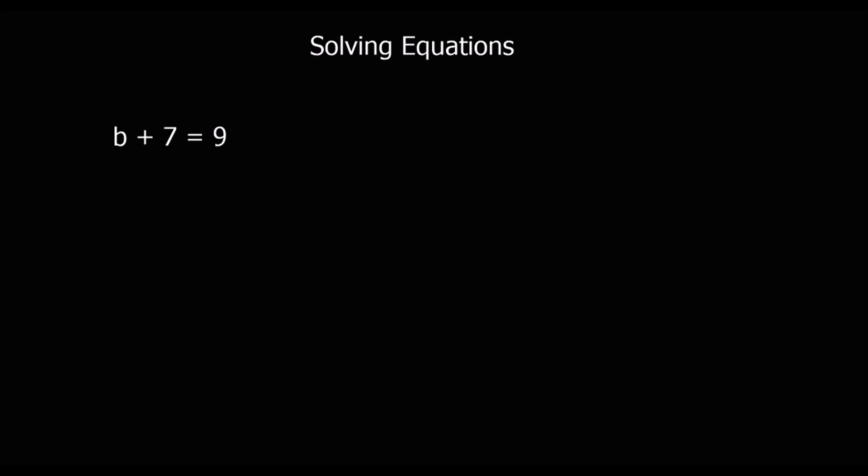Here's another one. We've got b plus 7 equals 9. So something plus 7 is equal to 9. So 2 plus 7 equals 9. So b must be 2.